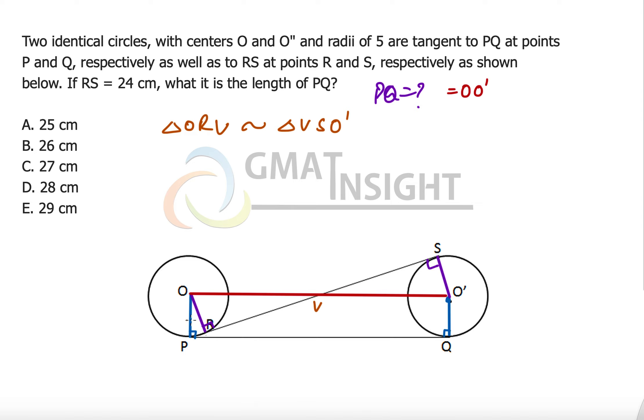And these two triangles are not only just similar but they are congruent. Why are they congruent? Because they have the same radius, therefore this line is equal to this line and they are similar as well because they are vertically opposite angles are same, two angles are 90 degrees so the third angle eventually has to be same. So these two triangles are congruent which means that OV will be equal to VO dash which is equal to half of PQ that we need to find out.